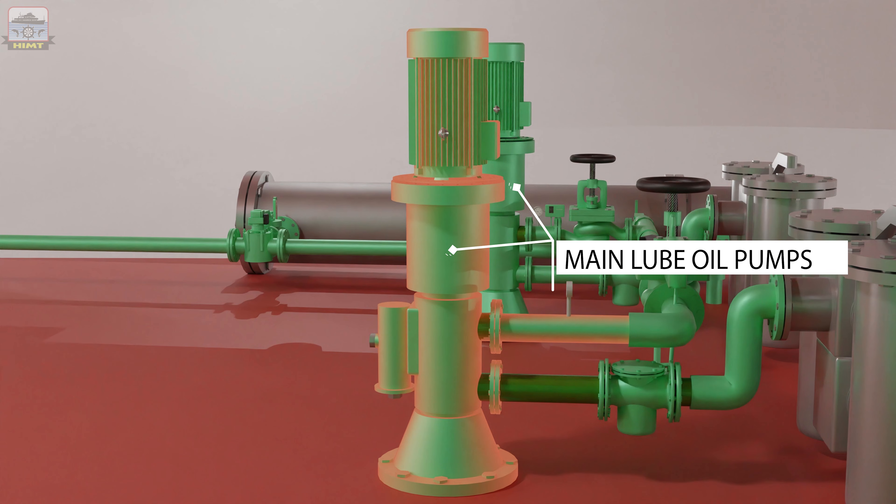The main lube oil pumps are either of centrifugal type or positive displacement type such as screw pumps. The pumps are fitted inside the sump, submerged under oil if they are centrifugal. The system is supplied by one of two pumps, with one operating and the other on standby, set for automatic cut-in should there be a lubricating oil pressure reduction.